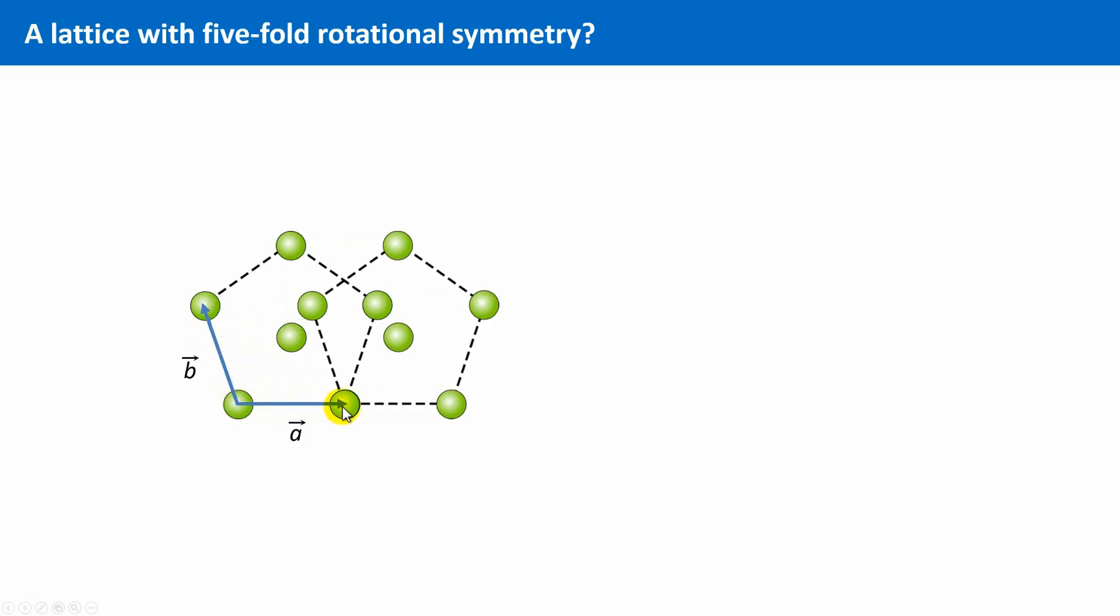Let's do it. Translation along A. Hmm, well, does not really look like a congruent pattern. Perhaps we can try to translate it along this direction, from the lattice point in the center to a lattice point at the corner. Hmm, that also doesn't work. So you see, a 5-fold rotational symmetry is incompatible with a repetitive, strictly periodic lattice. This can also be shown for rotational orders higher than 6.